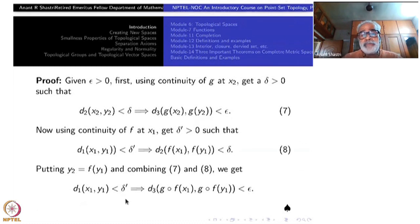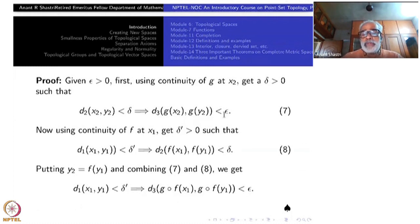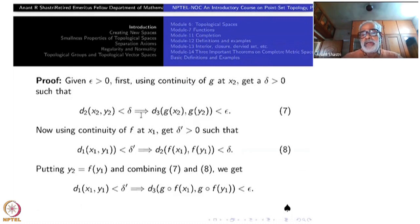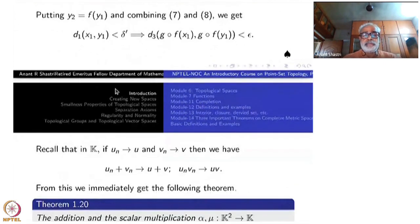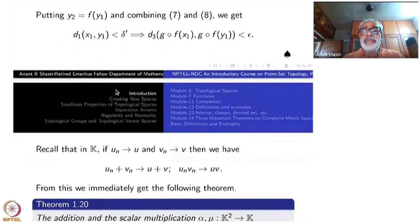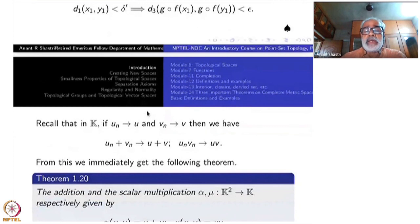This implies that g composite f is continuous at the point x1. We have used a similar combining argument twice: once for convergence of sequences and continuity, and here for the composition of two continuous functions. Let us now do some examples — I will state them as theorems because they are profound results. We go back to real numbers or complex numbers.